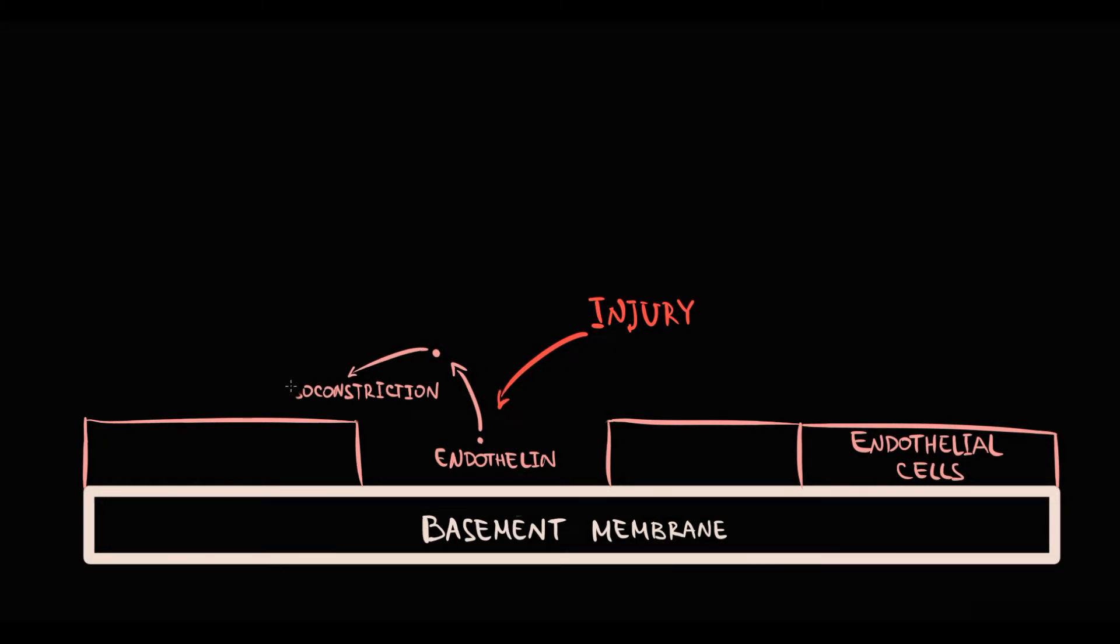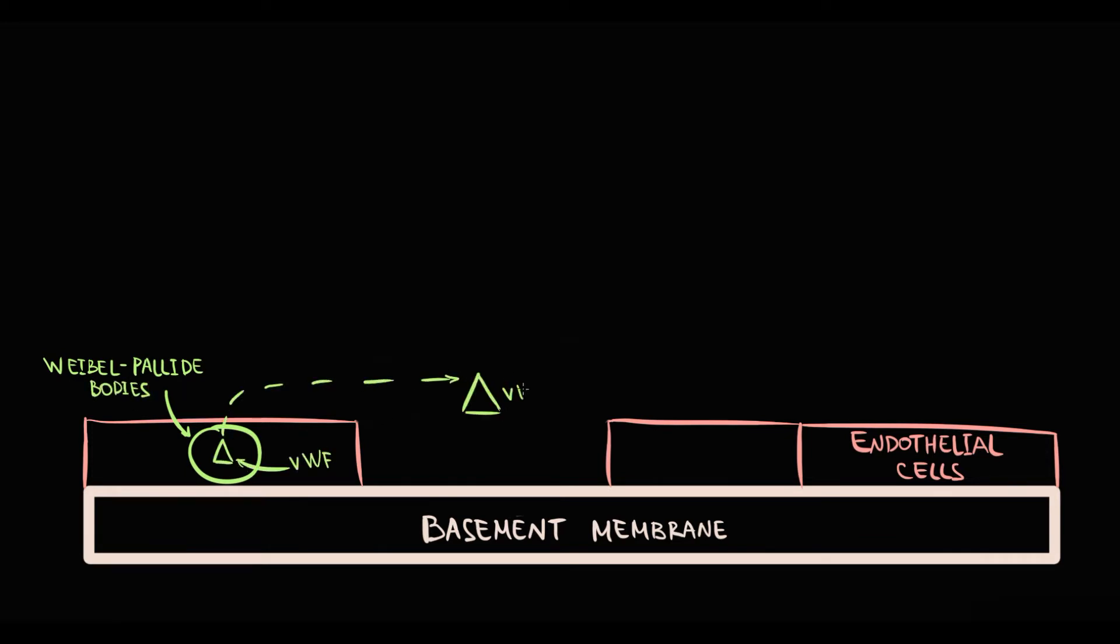After vasoconstriction, the organism has to immediately cover and repair the damaged area. To do this, endothelial cells release from Weibel-Palade bodies a huge amount of von Willebrand factor. In the bloodstream, von Willebrand factor binds to subendothelial collagen under the disrupted endothelial cell.